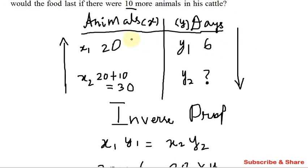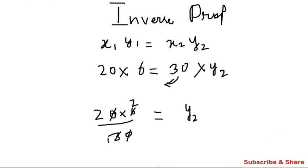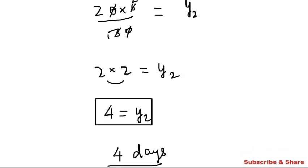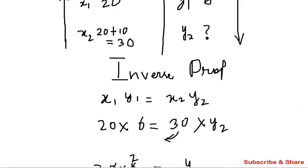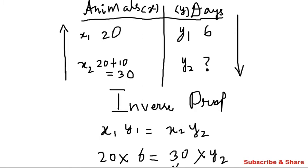So, 20 animals will have food for 6 days. With 30 animals — that is 10 animals extra — the days decrease. So this amount of food will last for 4 days. The food will last for 4 days. Thank you, students.